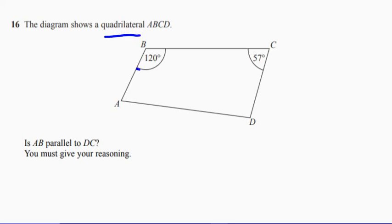I'm told some angles. There we go. And it says, is AB parallel to DC? So let's just think about what it's asking us. So it's saying, is that parallel to that?